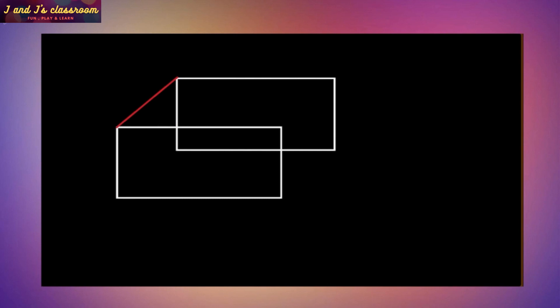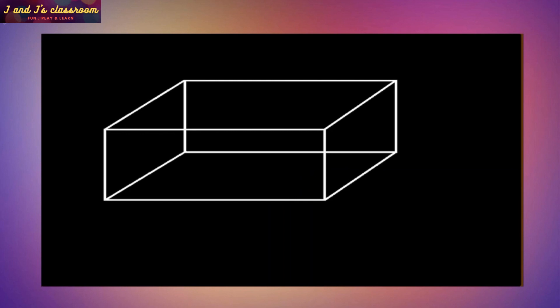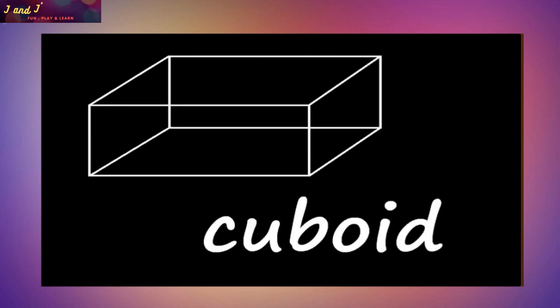Cuboid. Draw two rectangles and join these two rectangles with straight lines like this. Now what is it? Cuboid. C-U-B-O-I-D Cuboid.